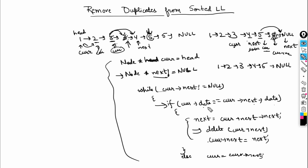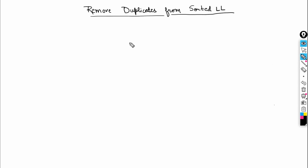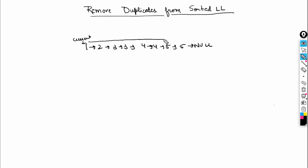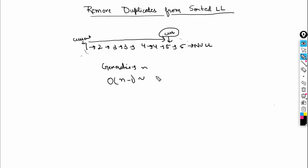Now let's discuss time complexity. The current pointer traverses the entire list from head to the second-last node. If the list has n nodes, current iterates over n−1 nodes. So the time complexity is O(n−1), which is effectively O(n). We remove duplicates from a sorted linked list in O(n) time.